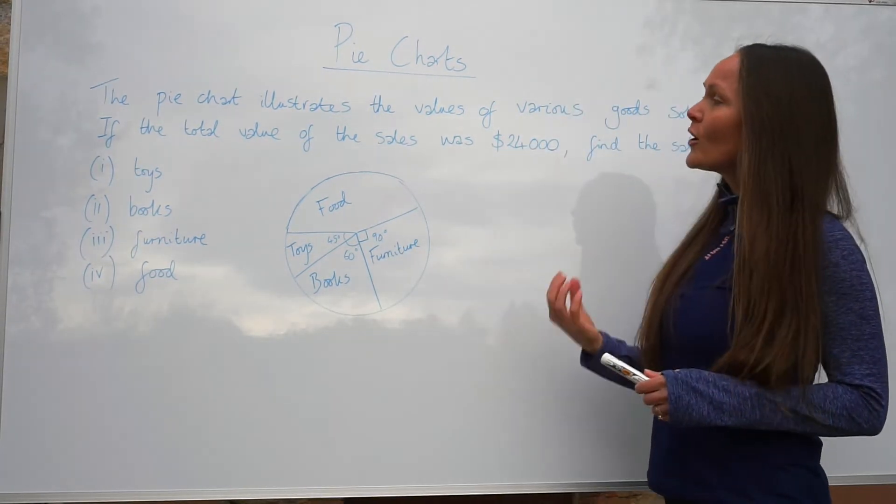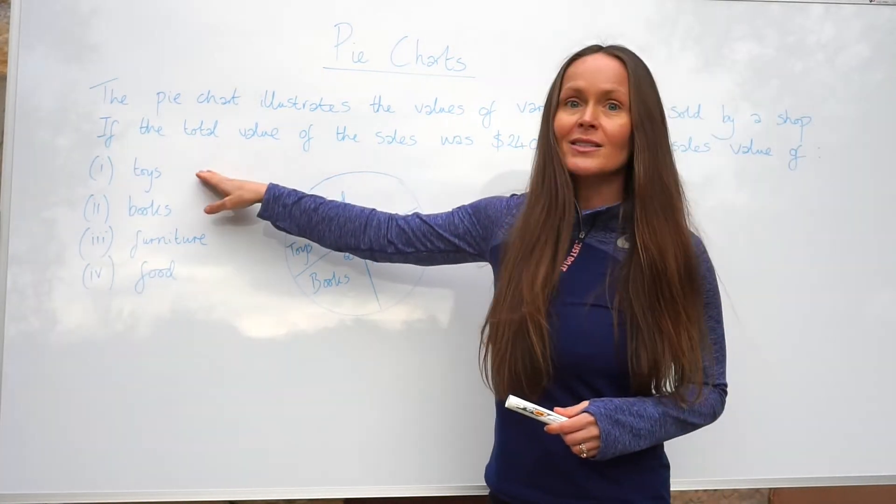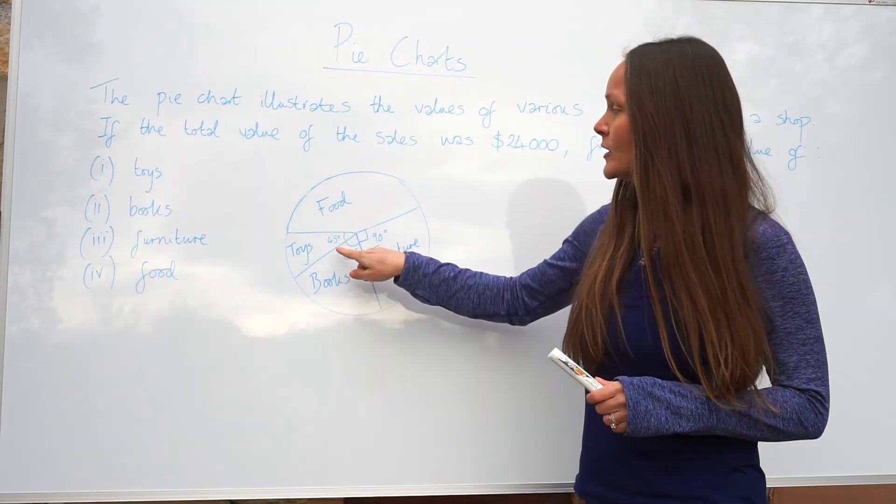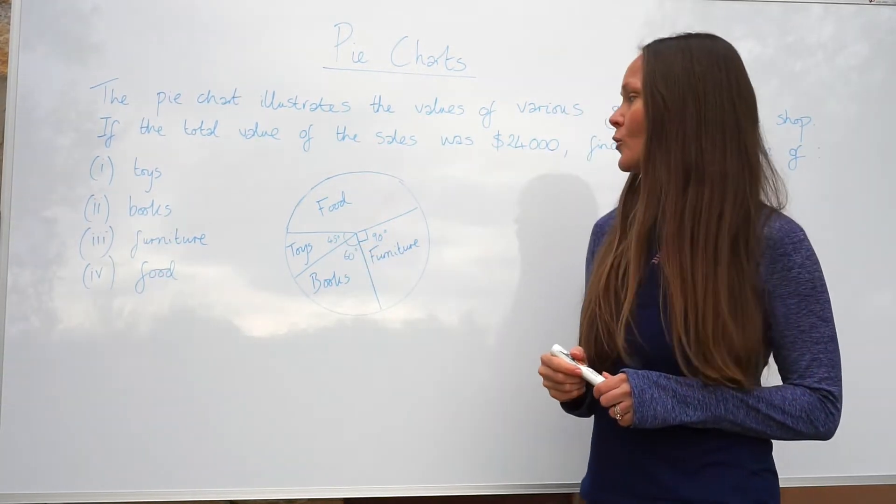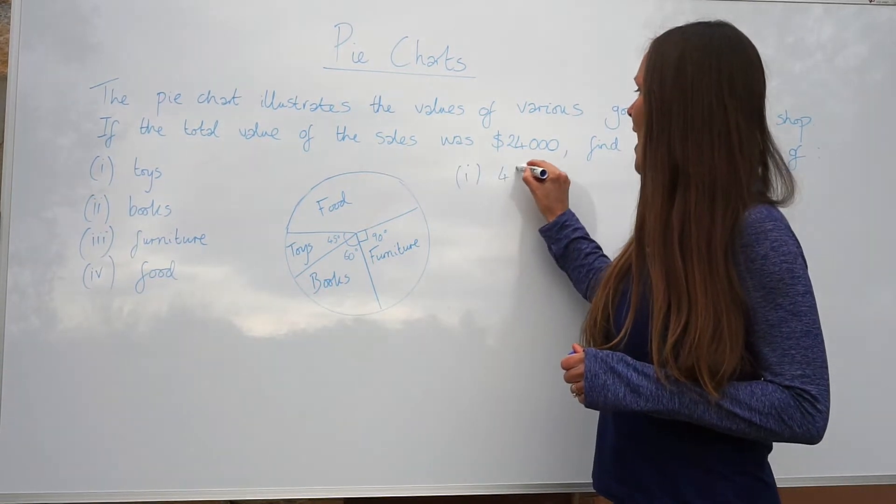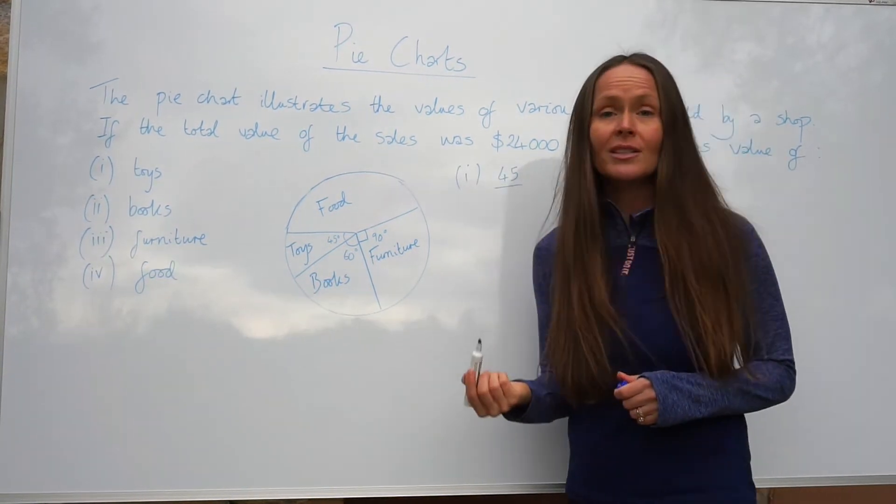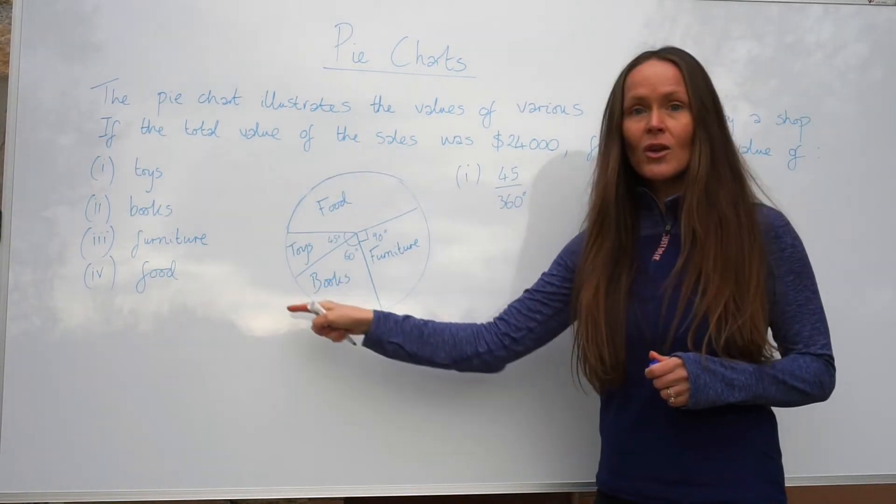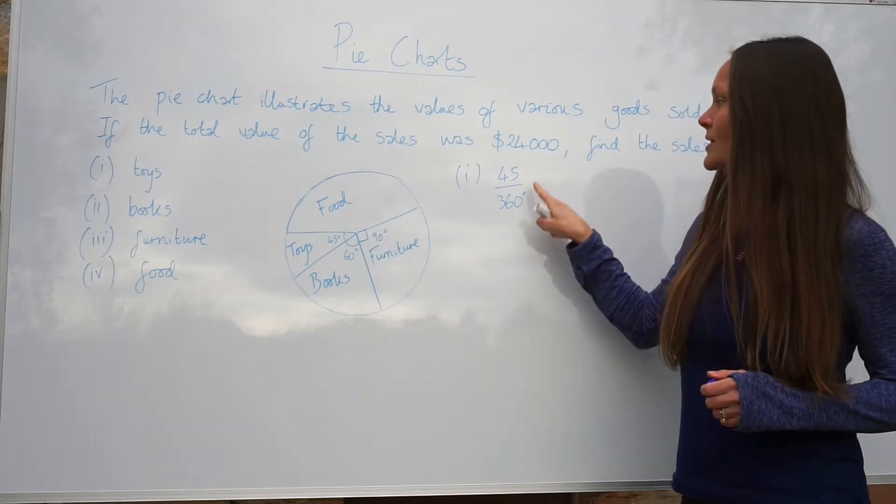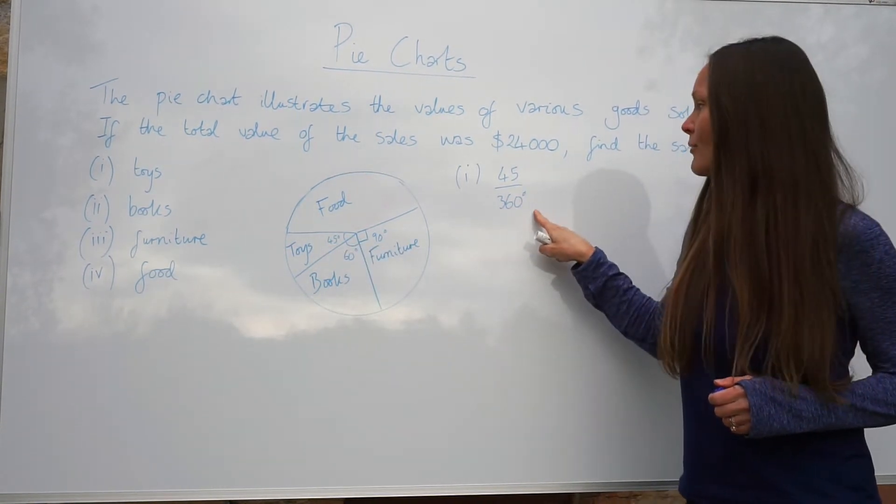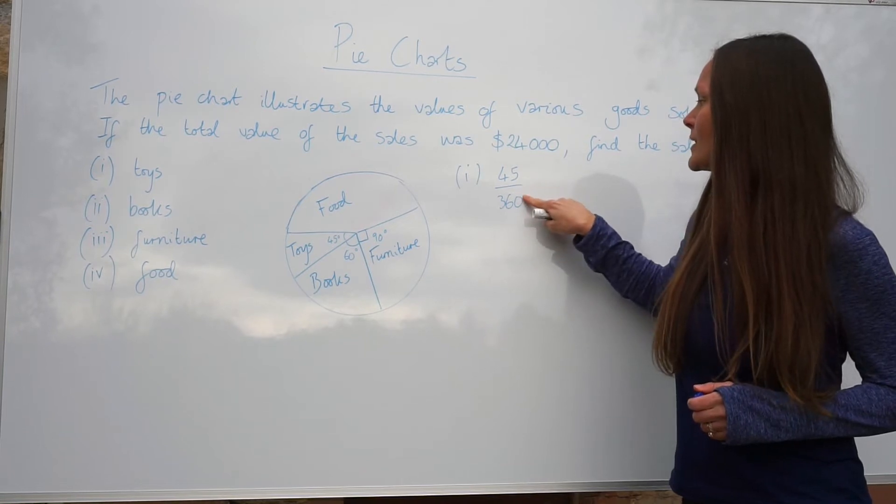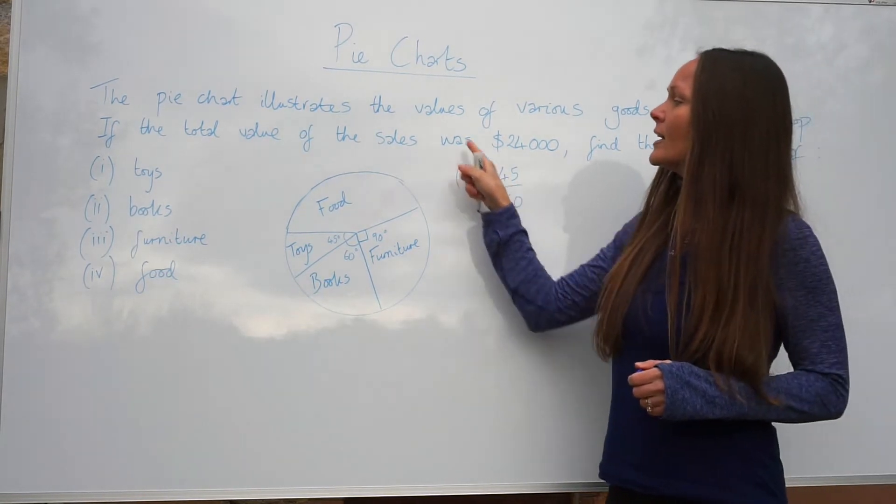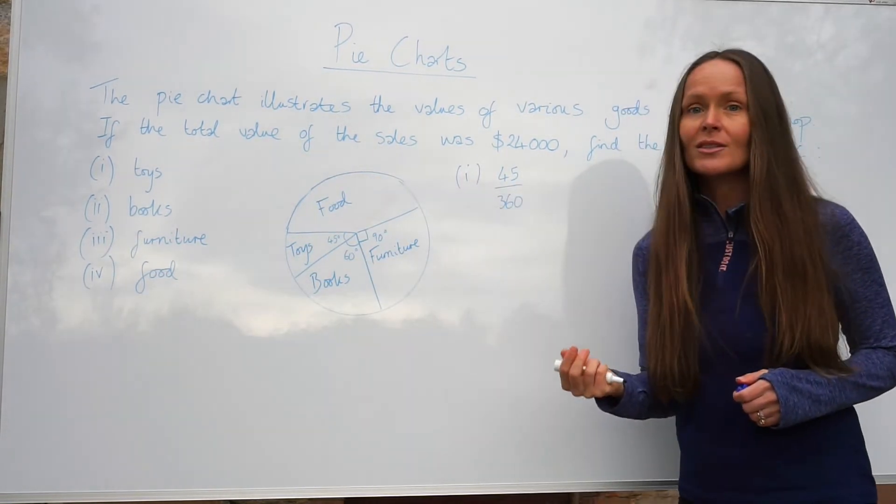Now to work out the value that was made for toys, what you need to do is find out the fraction of toys. And to do that, you need to use the number of degrees for toys. So 45 and write it out of 360 because there are 360 degrees in a full circle. So that is the fraction of toys, 45 over 360. It's always going to be out of 360 because pie charts are always circles.